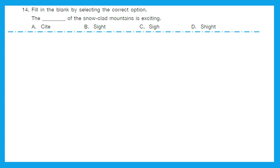Question 14 and 15: Fill in the blanks. The dash of the snow-clad mountains is exciting. Is it CITE, SITE, SIGN, or SIGHT? The right answer should relate to the vision of the snow-clad mountain, so option B, SIGHT, is correct, because it means the vision or visual appearance.